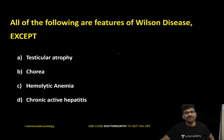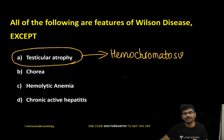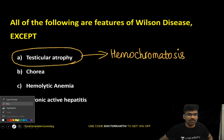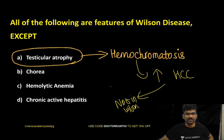Which of the following is NOT a feature of Wilson's disease? The answer is testicular atrophy — that is a feature of hemochromatosis, not Wilson's disease. Also remember that hemochromatosis carries an increased risk of hepatocellular carcinoma, whereas Wilson's disease does not carry this high risk.